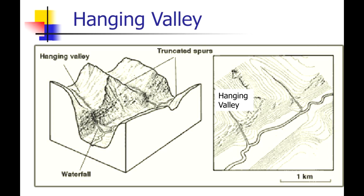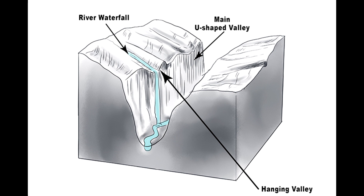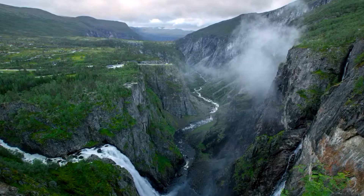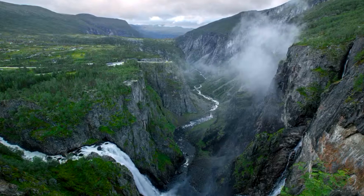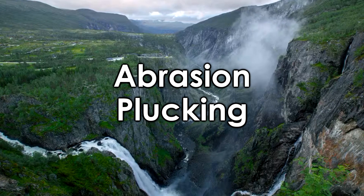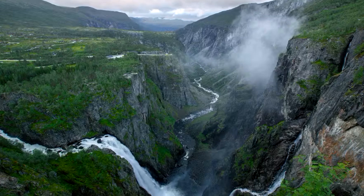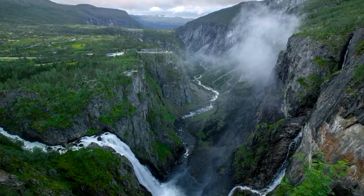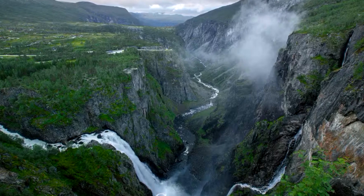The formation of hanging valleys can be attributed to the varying rates of erosion between the main valleys and their tributaries. Hanging valleys are primarily a product of glaciation, a process that occurs in areas with substantial ice accumulation. They are closely associated with U-shaped valleys, which are deep and wide valleys carved by glaciers. As glaciers move downhill, they erode the landscape through a combination of processes like abrasion and plucking, exerting immense pressure on the underlying bedrock and leading to the excavation of the valley floor.